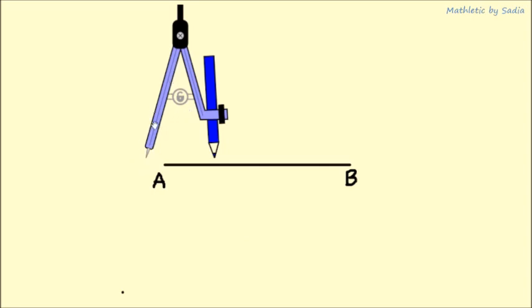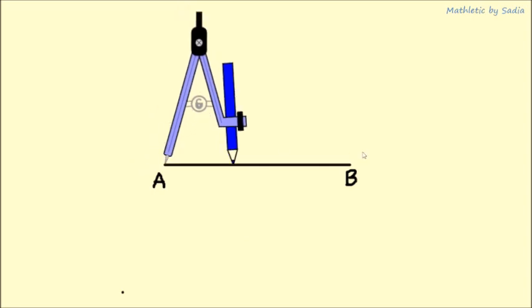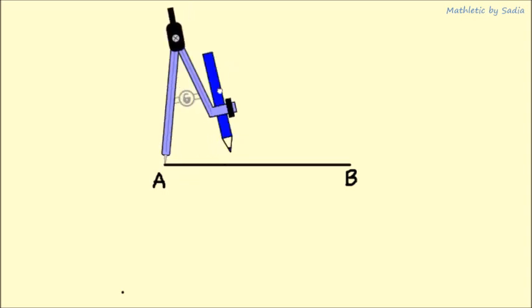Place the pointed part at point A, then move the other leg to adjust the gap between them. You need to go more than halfway along this line.